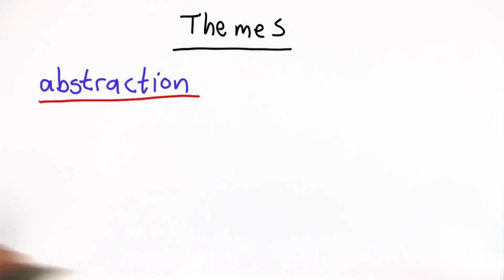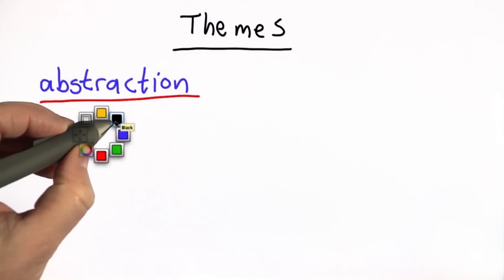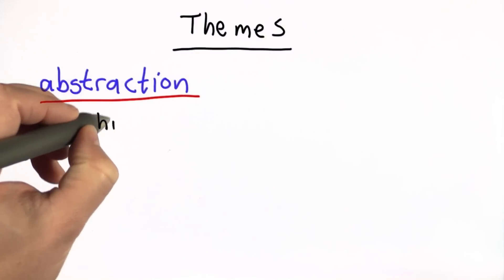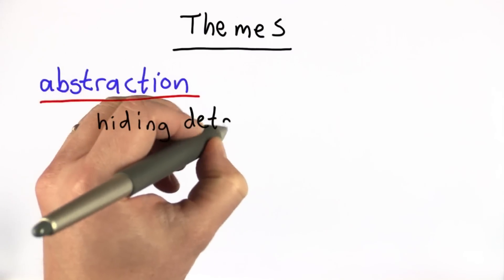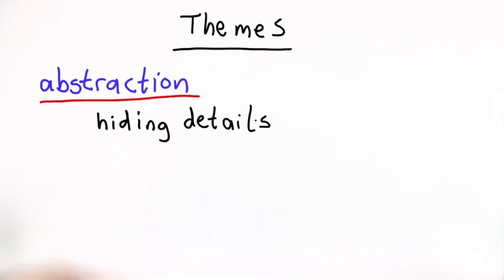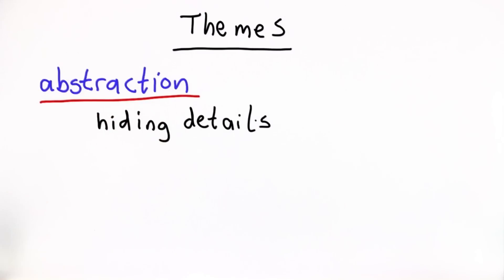The first one is abstraction. And abstraction is all about hiding details. The point of abstraction is to make it so you can have one thing that is used in many different ways, and you can use it without necessarily understanding all the details behind it.